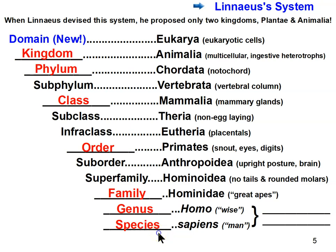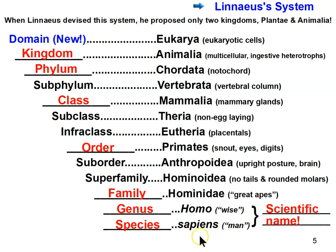Within family Hominidae are orangutans, gorillas, chimpanzees, and bonobos. Then genus Homo and species sapiens — the genus and species together form the scientific name, italicized, first capitalized, second lowercase: Homo sapiens. As a side note, some taxonomists consider us a subspecies — Homo sapiens sapiens — with Neanderthals as Homo sapiens neanderthalensis, since they were so closely related. But other taxonomists classify Neanderthals as Homo neanderthalensis instead.